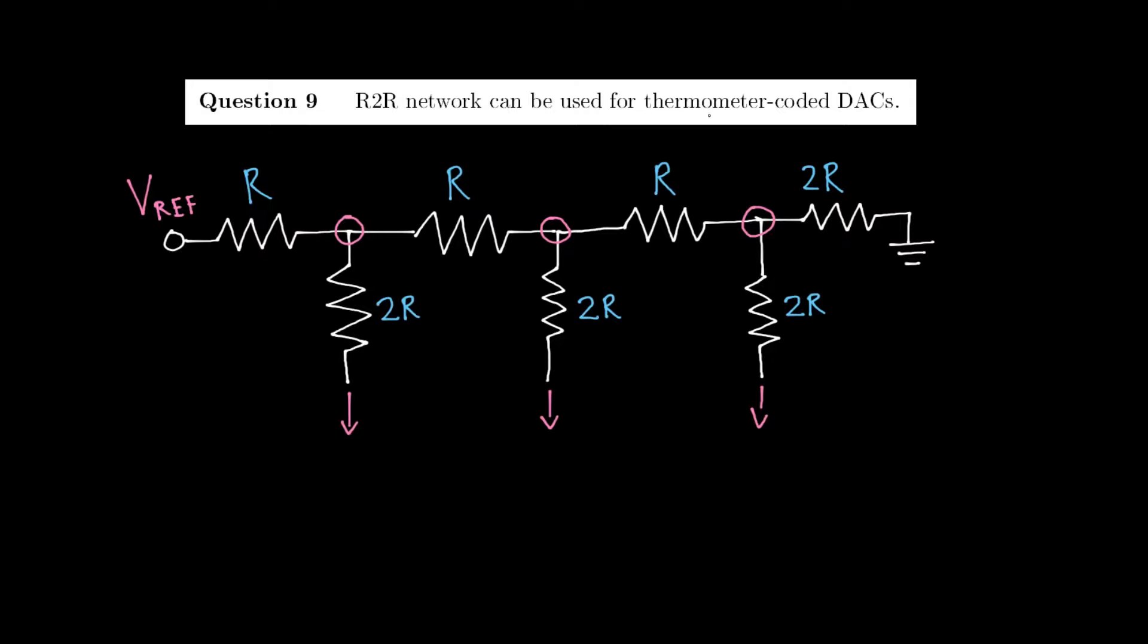However, thermometer coded DACs actually use equally sized currents. It's a different type of encoding, where the number of 1s on the right hand side represents the magnitude of the represented number.